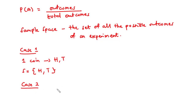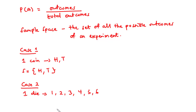For case two, we consider the experiment of tossing a six-sided die once. The possible outcomes are 1, 2, 3, 4, 5, and 6. So the sample space for this experiment is {1, 2, 3, 4, 5, 6}.